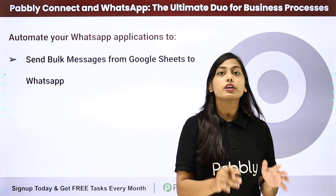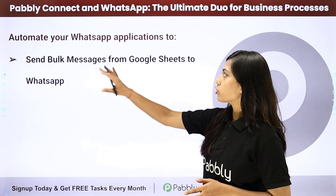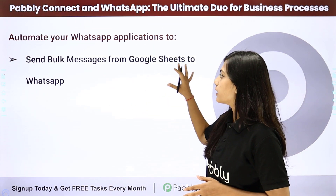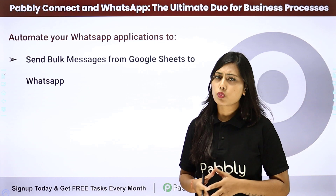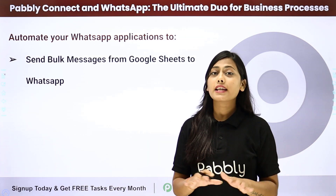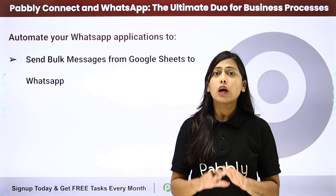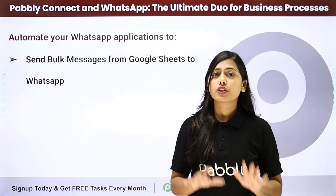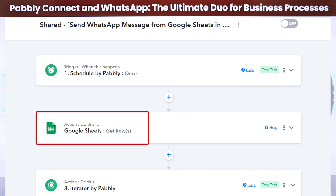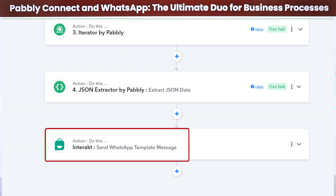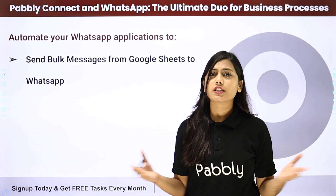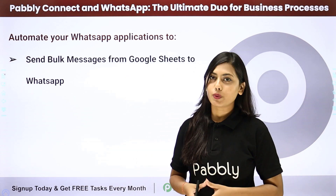The first automation is to send bulk messages from Google Sheets to WhatsApp — whether it is festival wishes or a notification to all the team members. You can set up this automation without any coding or technical expertise. You just have to integrate two applications: retrieve the data from Google Sheets and integrate it with Interact or WhatsApp Cloud API, and bulk messages will be sent to all the contacts on your WhatsApp.